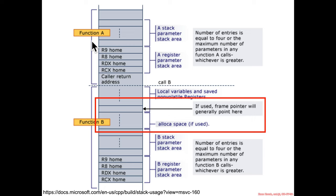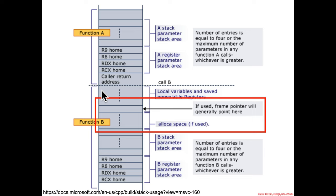From the Microsoft documentation, the stack diagram draws high addresses high and low addresses low. It shows the shadow store area for rcx, rdx, r8, r9, the stack parameter area, and return address — mapping up to what we expect. Local variables and non-volatile (callee save) registers are there, but then interestingly it notes: if used, the frame pointer will generally point here.